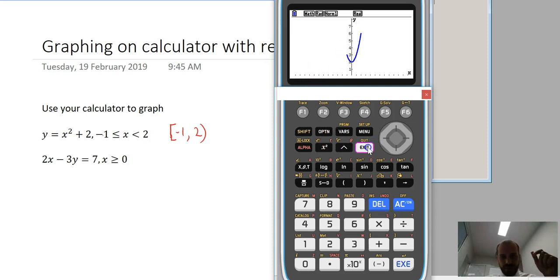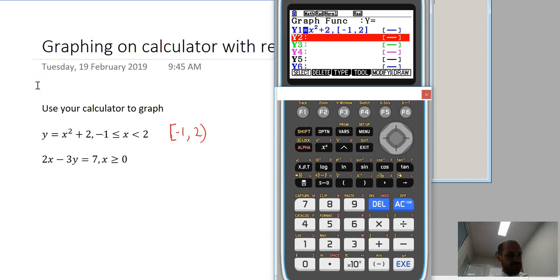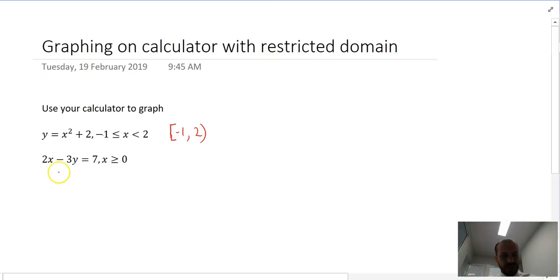Now I might just draw that next one real quick. The only real complications with this next one is that I have to rearrange it to make y equals. So it's going to be 7 minus 2x equals negative 3y. So y is equal to 7 minus 2x over negative 3.